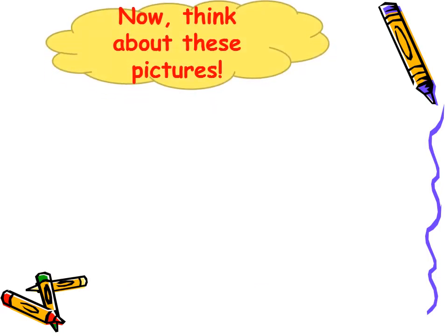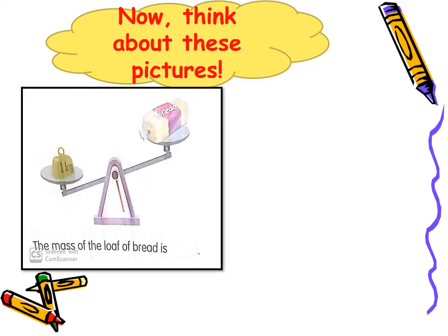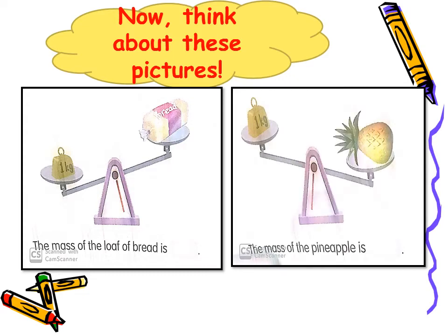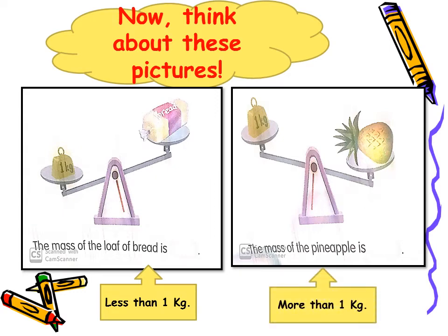Now think about these pictures. In the first picture, the mass of the loaf of bread — is it more or less than one kg? What about the pineapple? Is it more or less than one kg? On the balance, the loaf of bread is going up, so it is less than one kg. The pineapple is going down, so it is more than one kg.